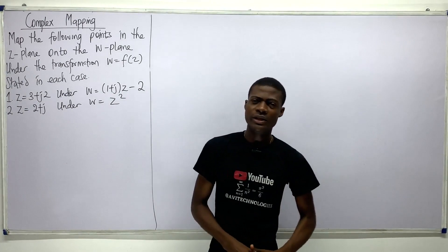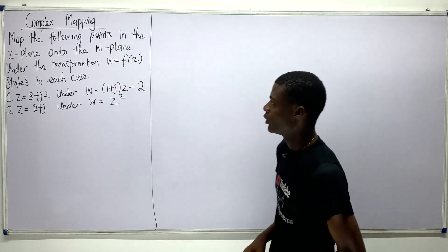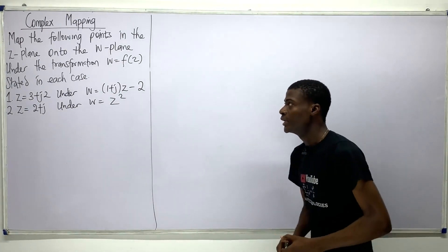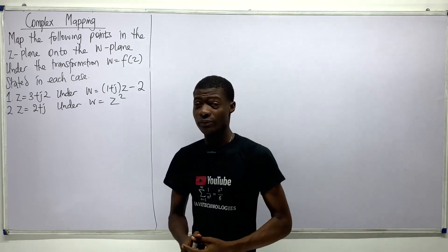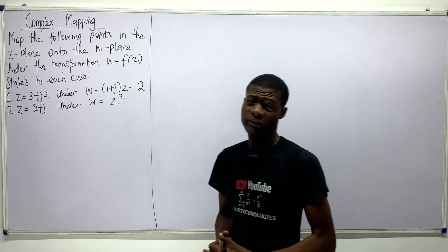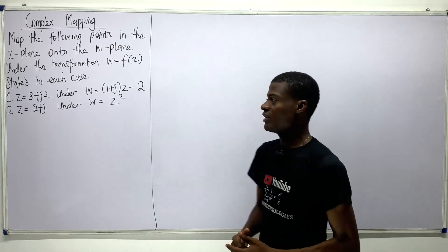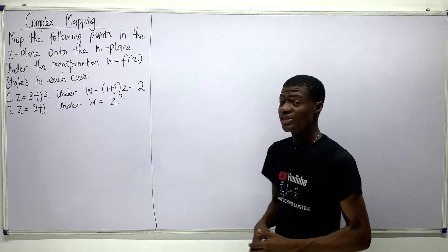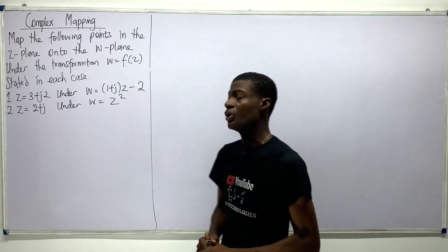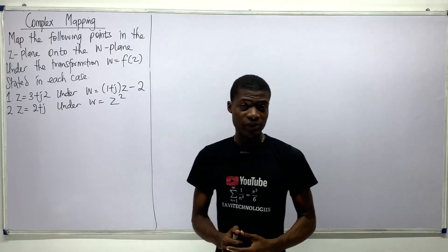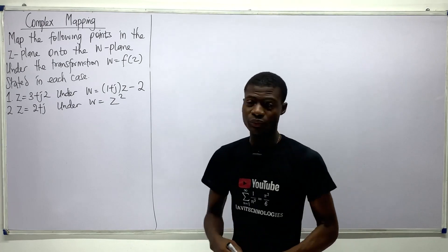Welcome back. In this video we've been asked to map the following points in the z-plane onto the w-plane under the transformation w = f(z) stated in each case. The first one says z = 3 + j2 under w = 1 + j(z − 2).